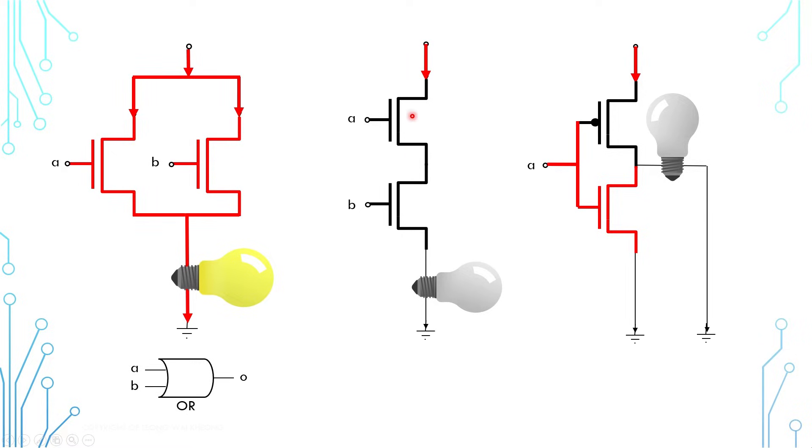At the middle arrangement, the transistors are arranged in a serial manner. Both transistor A and transistor B need to be turned on for the electric current to pass through. This forms a logical AND gate.